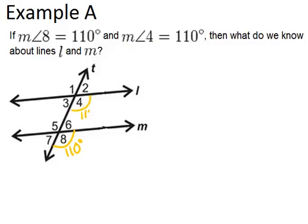Then what do we know about lines L and M? So angle 8 and angle 4 are corresponding angles, because they're both in the bottom right corner of the set of four angles. And what you should know about corresponding angles is that they are congruent if and only if lines are parallel.